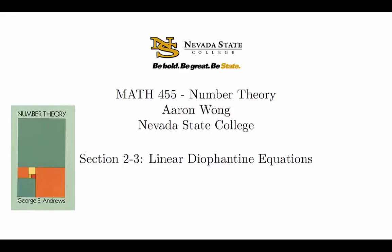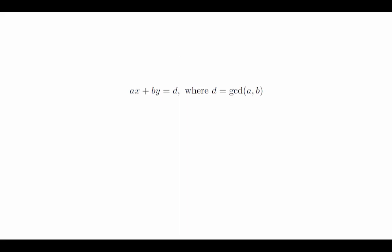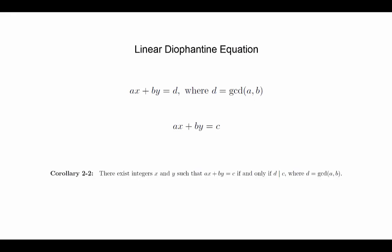At the end of the last video, we mentioned that the Euclidean algorithm applied to the numbers a and b gave us a method for generating an integral linear combination of a and b equal to the greatest common divisor. In other words, we have an algorithm that generates solutions to the equation ax plus by equals d, where d is the GCD of a and b. This is an example of a linear Diophantine equation. We want to consider the more general case in which we seek integer solutions to the equation ax plus by equals c, where a, b, and c are all integers. We saw from last class that equations of this form have a solution if and only if the GCD of a and b divides c.